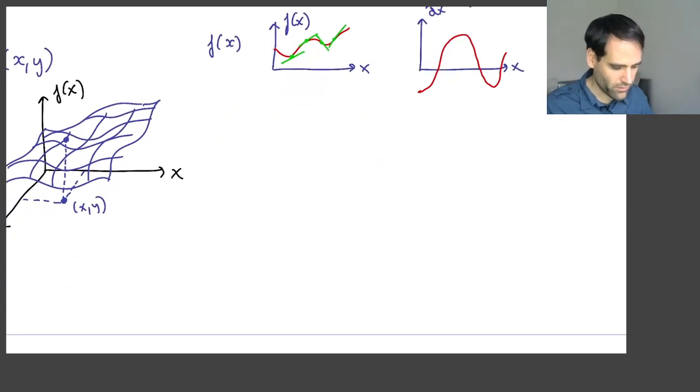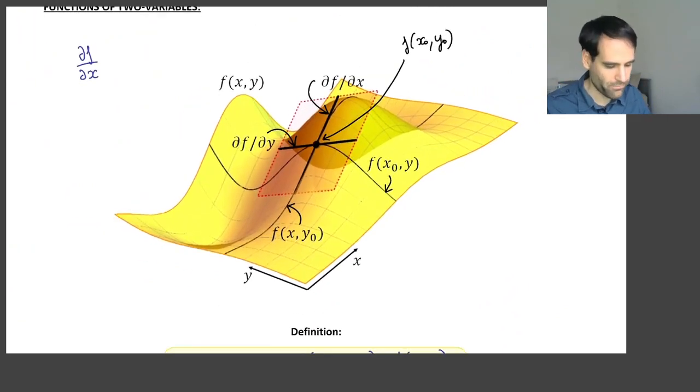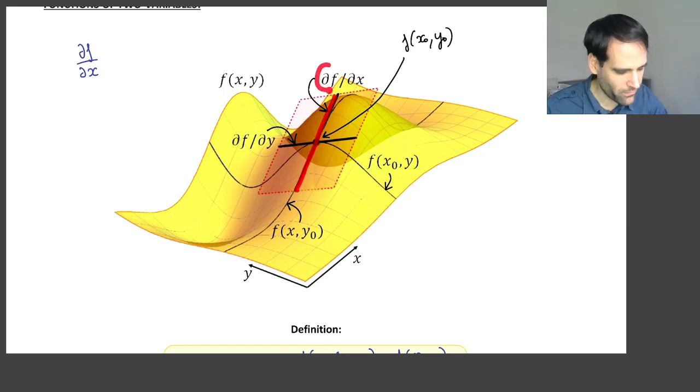A very similar thing happens in our case of partial differentiation. This slope, which is equal to the partial of f with respect to x, of course changes if we change x or if we change y.